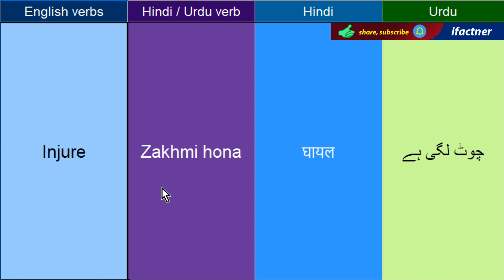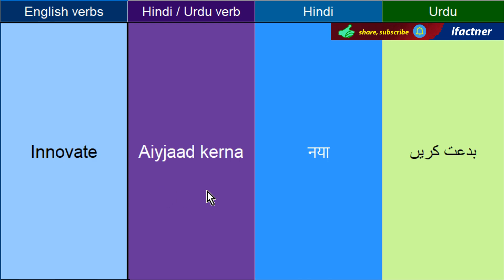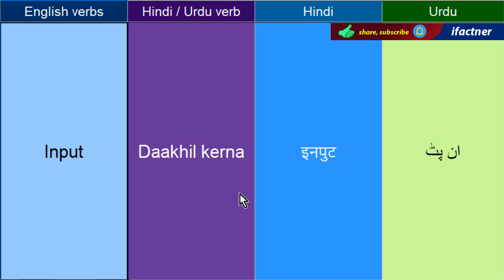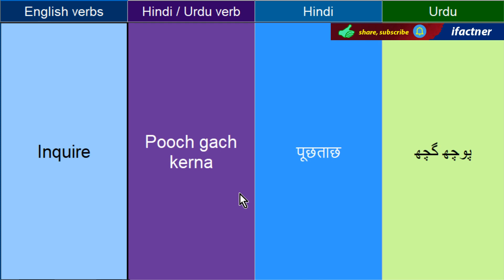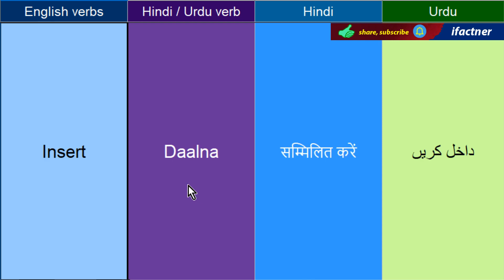Zakhmi hoona, chot lagna — Injure. Andr rakhna ya jordna — Inlay. Jis tarah shoes ke andir aap inlays rakhate hain. Aijad kerna — Innovate. Daakhil kerna — Input. Pooch kach kerna, inquiry kerna — Inquire. Kuch poochna, isi se inquiry nikkli hai. Bayaan kerna ya kuch likhna — Inscribe. Khas tawr peh kisi patther wagarah peh jo cheez likhi jaati hai usay Inscribe kerna kehtay hain.